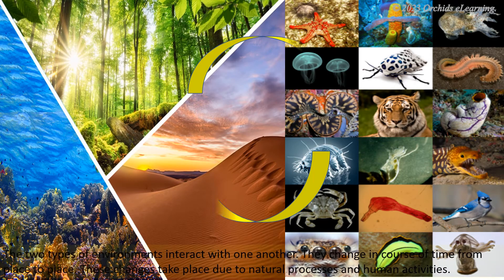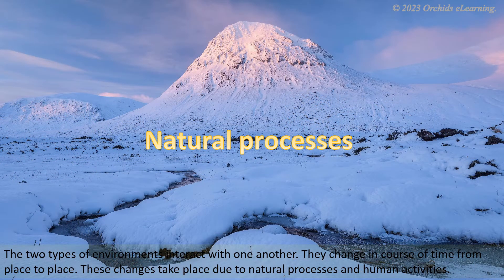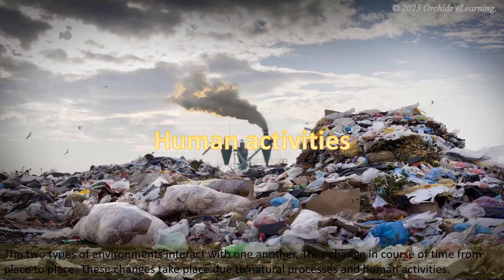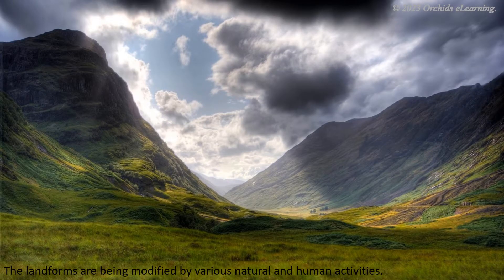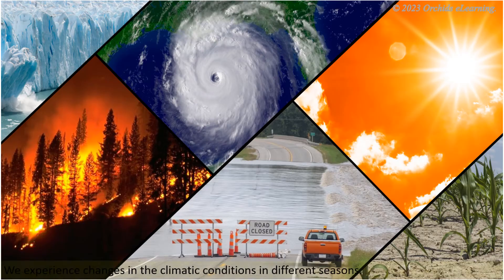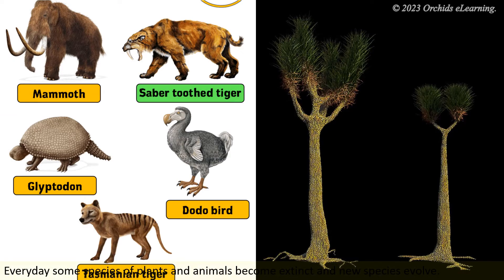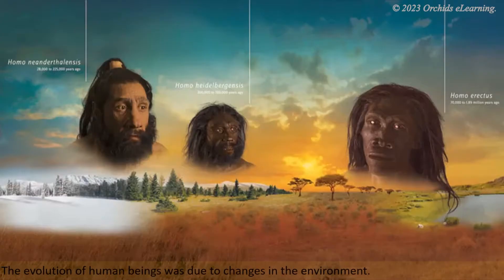The two types of environments interact with one another. They change in course of time, from place to place. These changes take place due to natural processes and human activities. Some of them are: landforms are being modified by various natural and human activities, we experience changes in climatic conditions in different seasons, and every day some species of plants and animals become extinct and new species evolve. The evolution of human beings was due to changes in the environment.